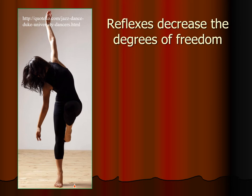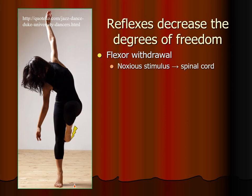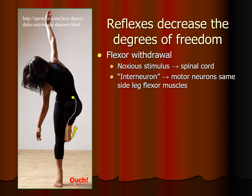Reflexes are a way that the central nervous system reduces the degrees of freedom. If we step on a tack or put our hand on a burner that hasn't cooled off, we don't need to think about it in order to withdraw our foot or hand — it happens through reflexes, so there is less load on the brain. An example is the flexor withdrawal reflex. If a villainous rascal has hidden a tack on the dance floor and the dancer steps on it, a noxious stimulus goes up to the spinal cord to an interneuron, which stimulates the leg flexors — including the hip flexors, hamstrings, and knee flexors — on the same side to get that foot away from the tack.